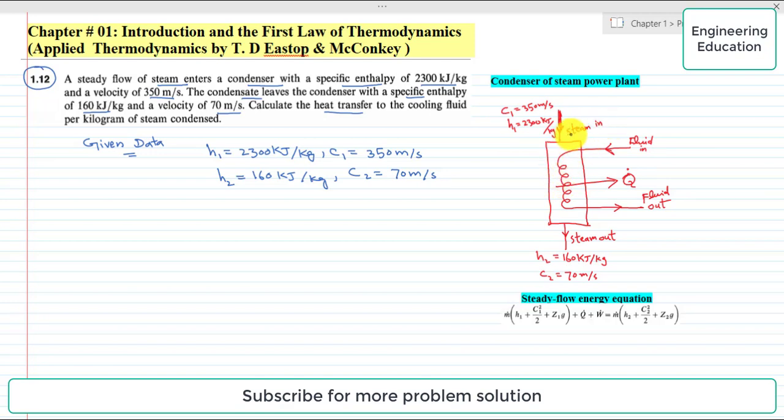This is the schematic of the condenser where the steam enters here and the condensate is leaving from the bottom. These are the velocities and specific enthalpies of the steam. This is the cooling fluid which absorbs heat from the steam.